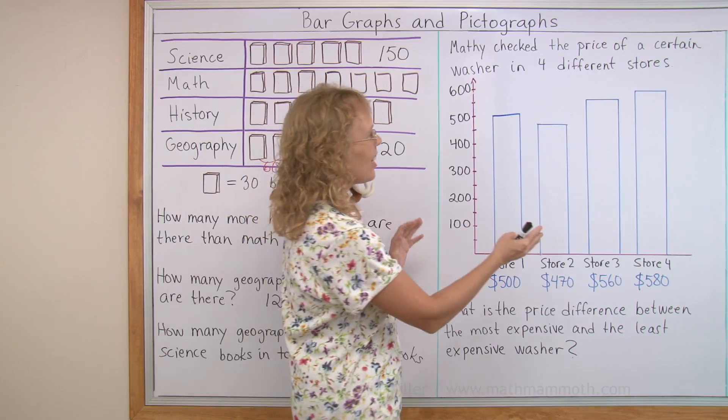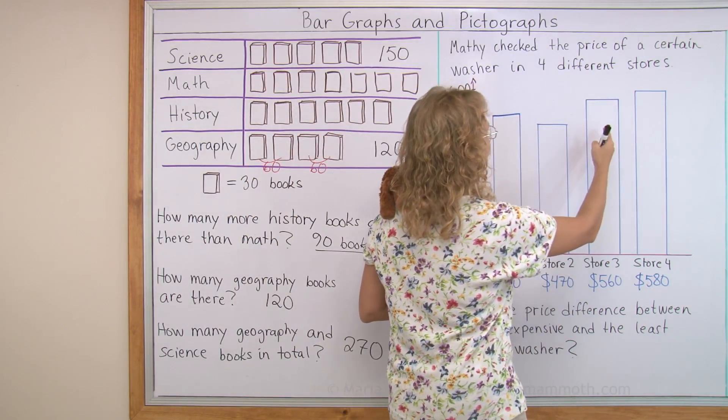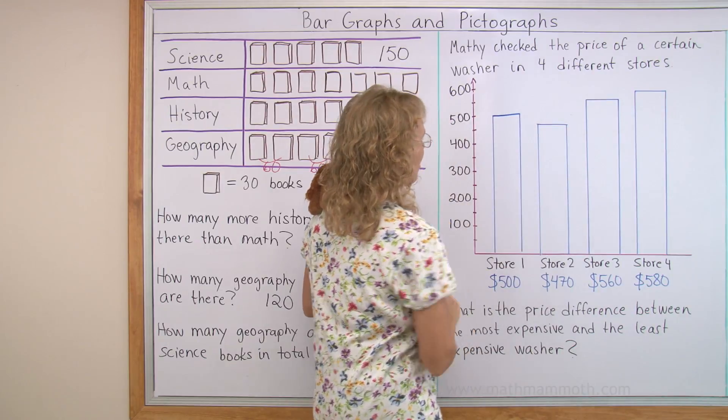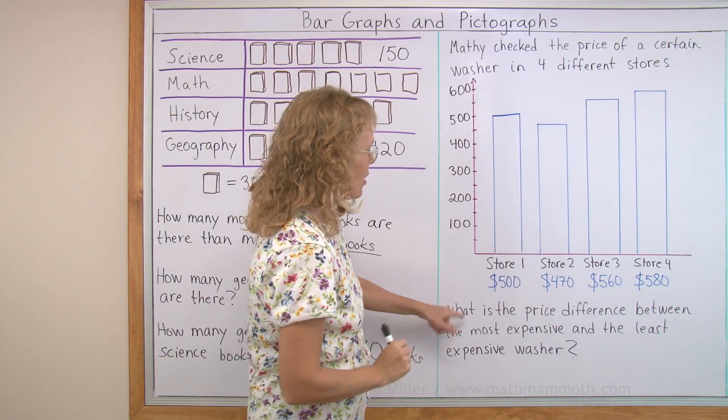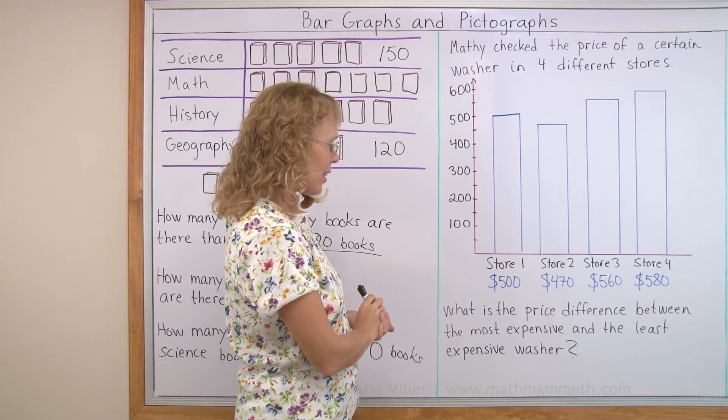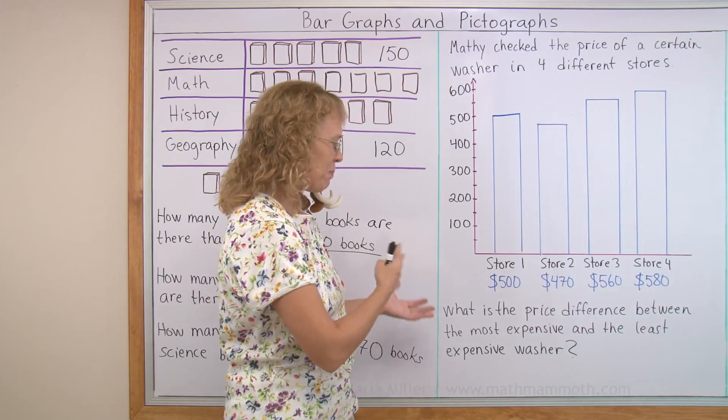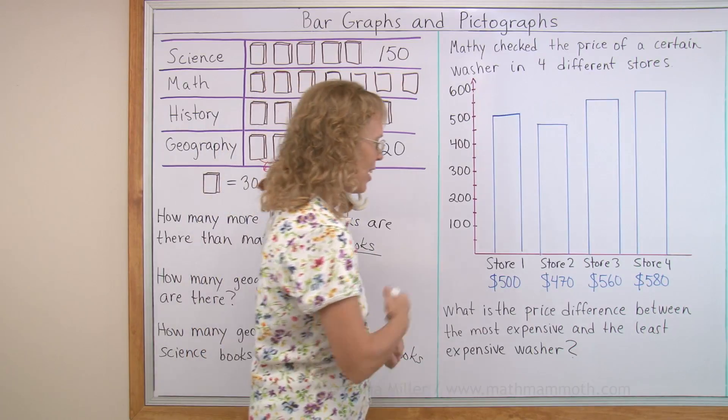Now you can see how this is the most expensive one, but it's just a little bit more expensive than that one. And this is the cheapest. What is the price difference between the most expensive and the least expensive washer?